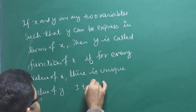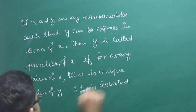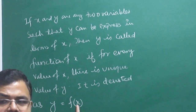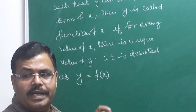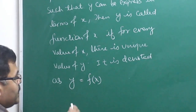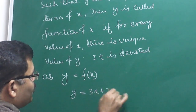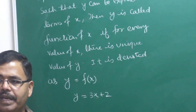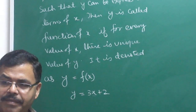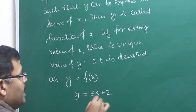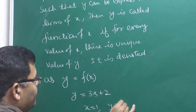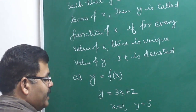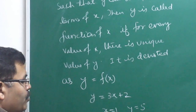This is denoted as y is a function of x. Meaning for every value of x, there should be a unique value of y. For example, if x equals 1, y equals 5; if x equals minus 1, y equals minus 1. For every value of x, there is a unique value of y.